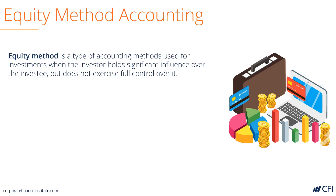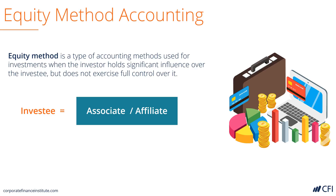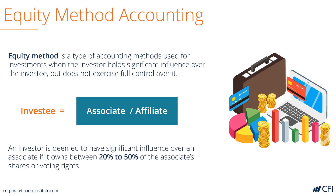Equity method accounting exists when a company has an investment in another business that it has influence over but not full control. The investee can also be called the associate or affiliate. This occurs when the company has a 20% to 50% investment in the business, meaning it controls 20% to 50% of the voting rights.